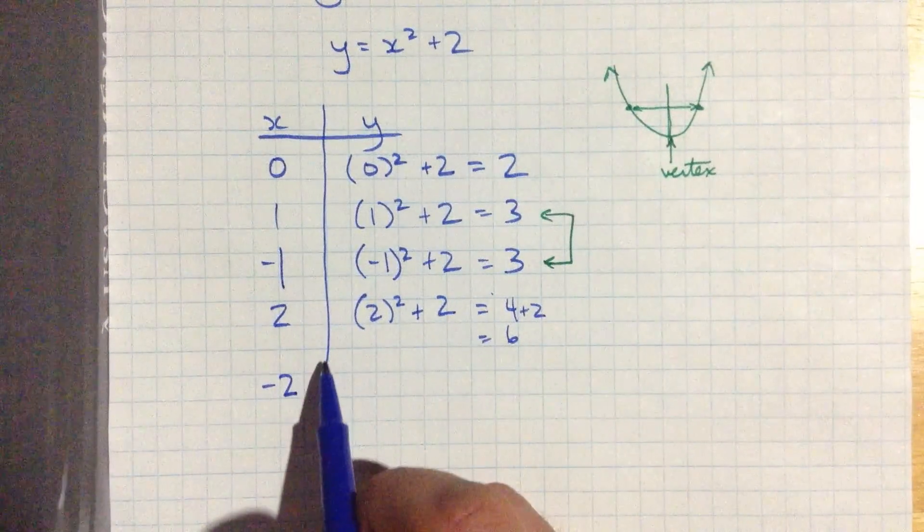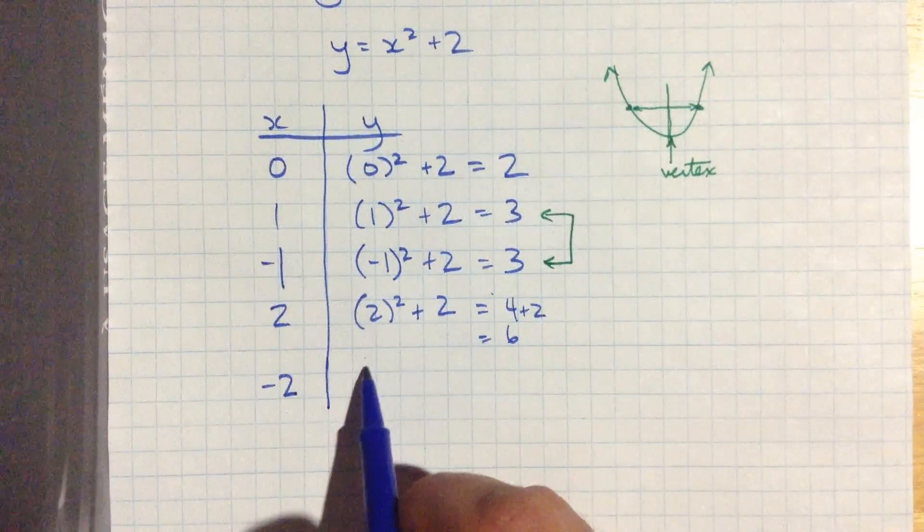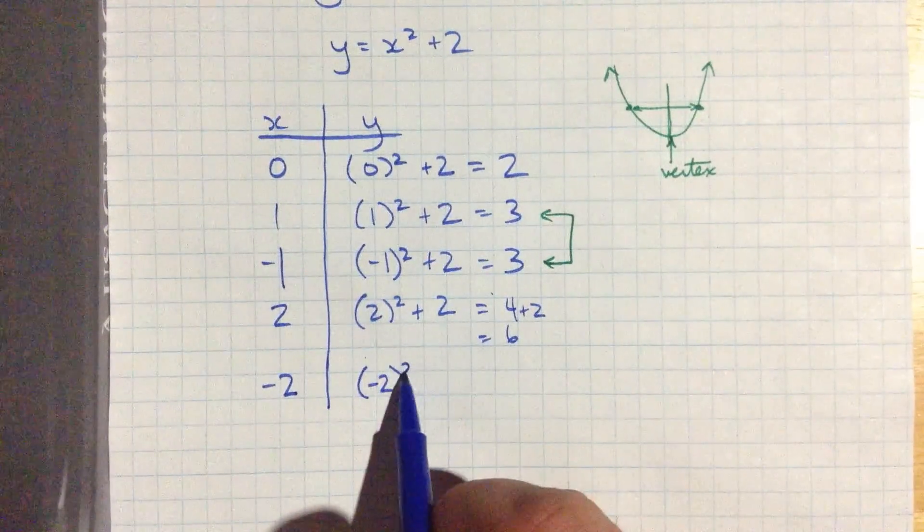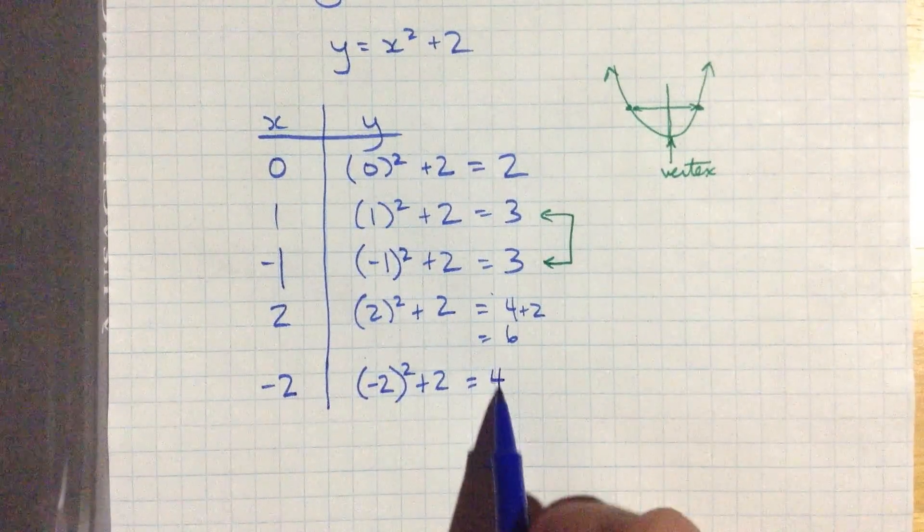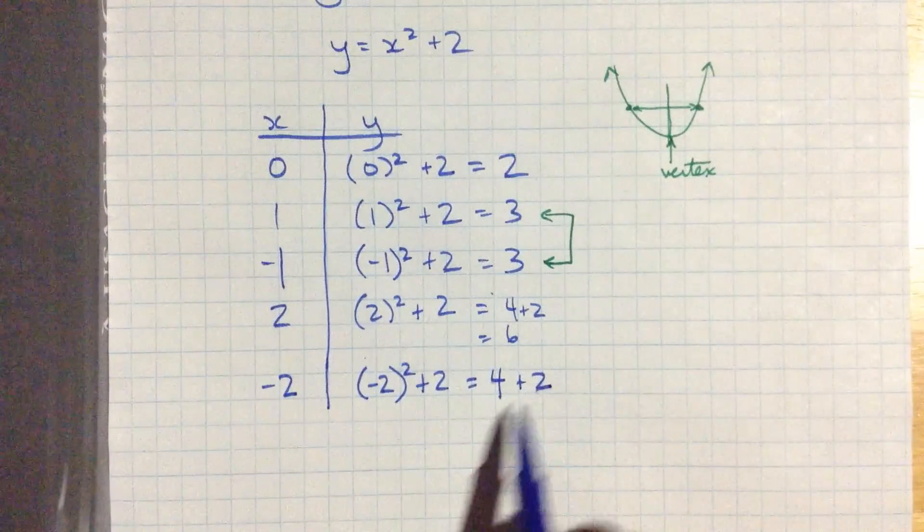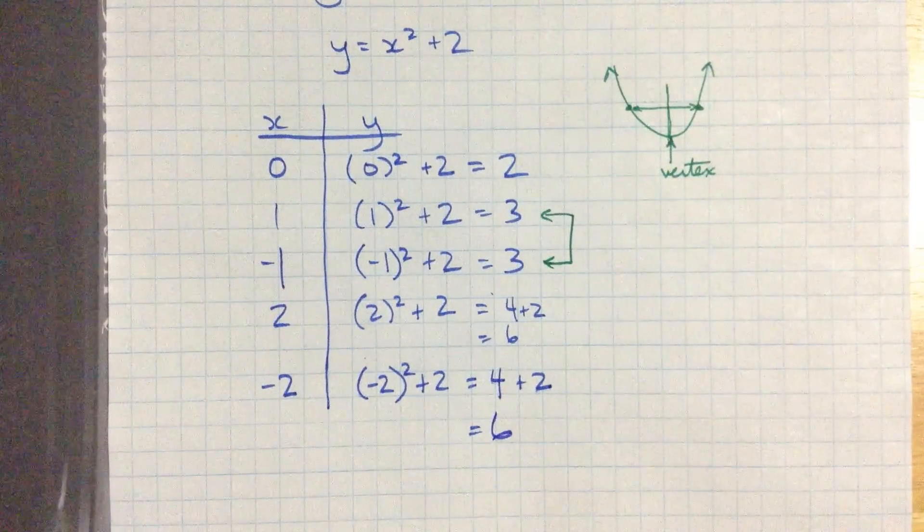And I'm expecting something here when I choose negative 2 for my x value. That's negative 2 squared plus 2. Negative 2 times negative 2 is 4. Plus 2 is 6 again.